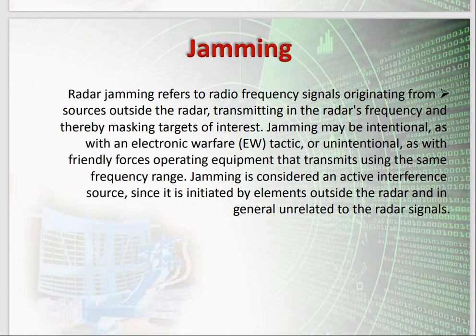Next is radar jamming. Jamming refers to radio frequency signals originating from a source outside the radar, transmitting at the radar frequency and thereby masking targets of interest. Jamming may be intentional, as with an electronic warfare tactic, or unintentional, as with friendly forces operating equipment that transmits using the same frequency range. Jamming is considered an active interference source, initiated by elements outside the radar and generally unrelated to the radar signals.